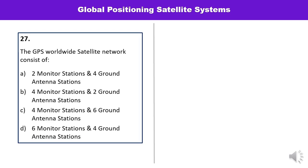Question number twenty-seven: The GPS worldwide satellite network consists of — various combinations of monitor stations and ground antenna stations are given, and you must pick the correct one. GPS worldwide satellite network consists of 6 monitor stations and 4 ground antenna stations.